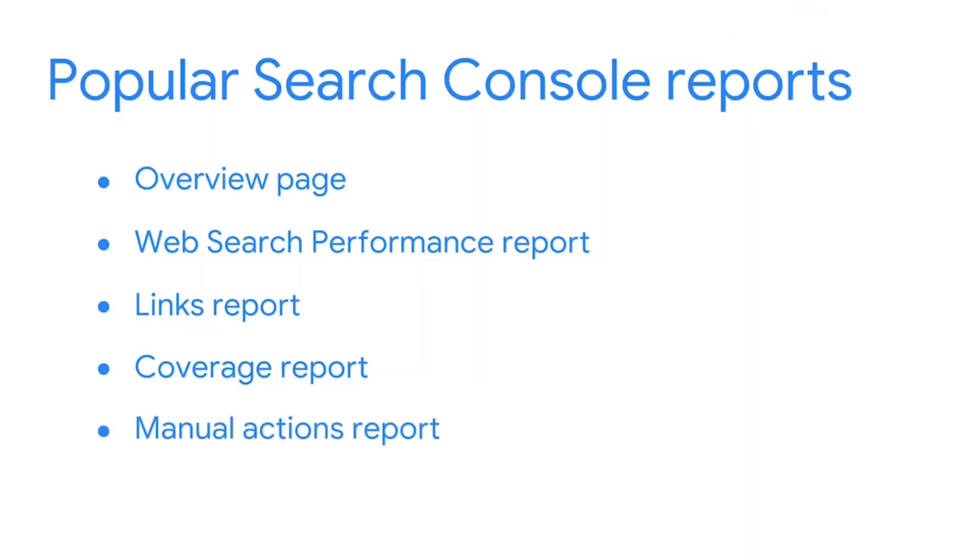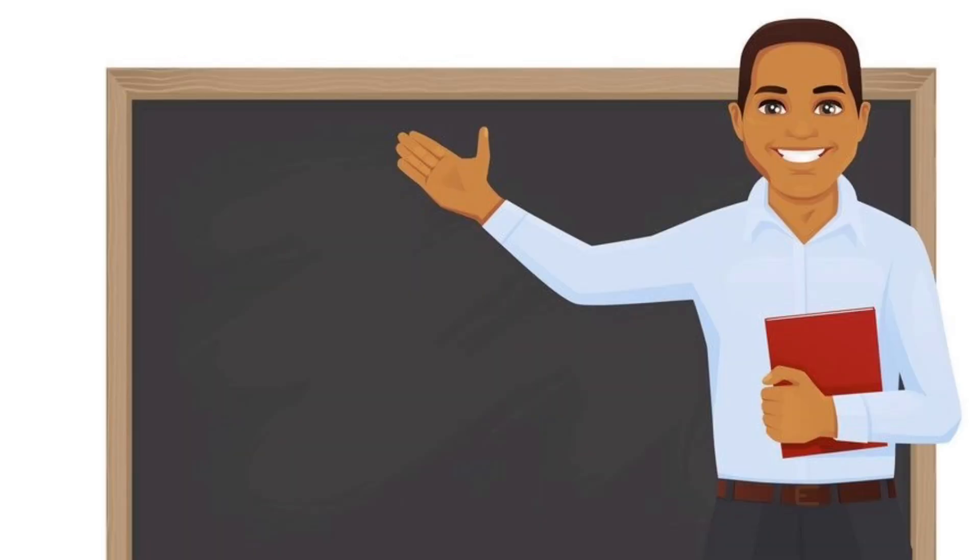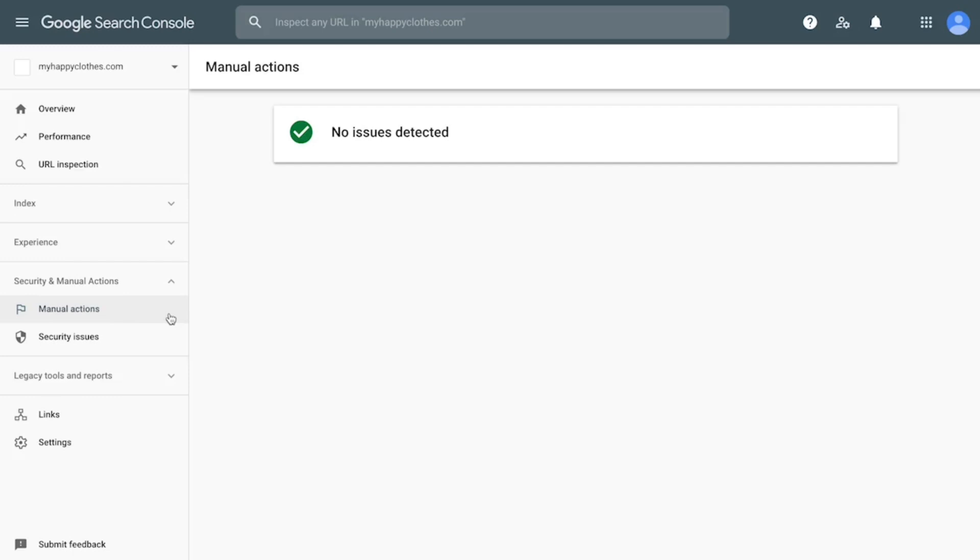Another report to review is the manual actions report. A manual action is Google's way to demote or remove web pages that are not in-compliant with its webmaster quality guidelines. Typically, manual actions are for websites or web pages that try to manipulate the search index.